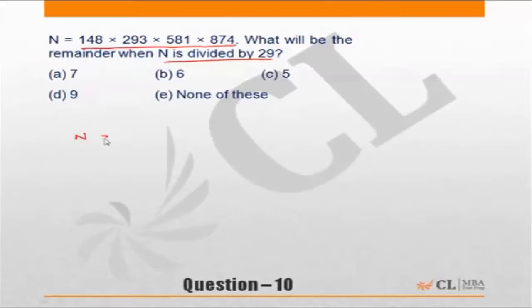Now the question says N is 148 into 293 into 581 into 874. So I will rewrite N as: N equals 148. I know 30 into 5 is 150, so 29 into 5 should be 145.